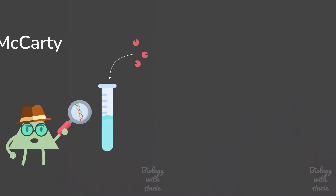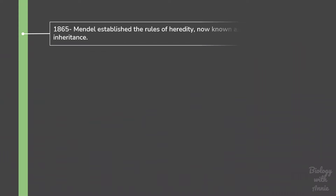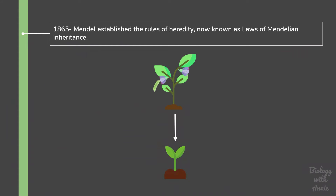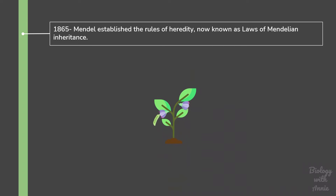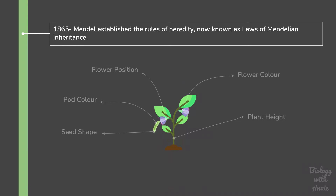In the 19th century, Mendel showed that genetic information is transmitted from parents to offspring generation after generation. This genetic material, also called genes, controls the different traits of an organism. However, the physical nature of these genes was still unknown.